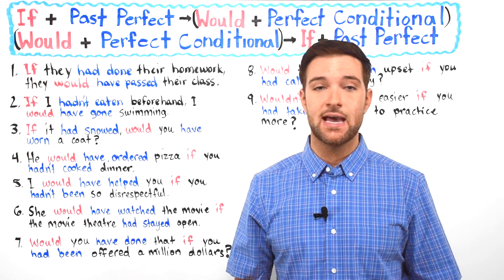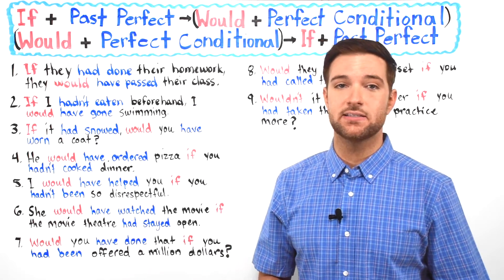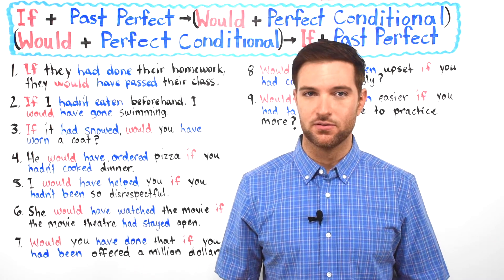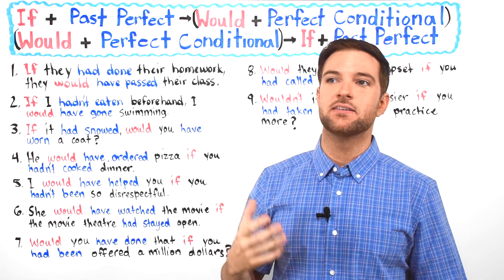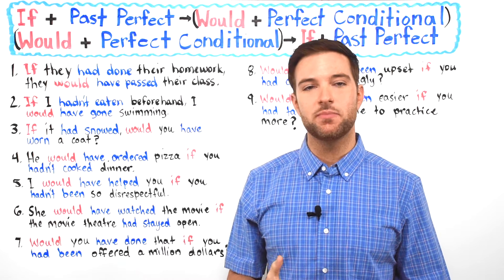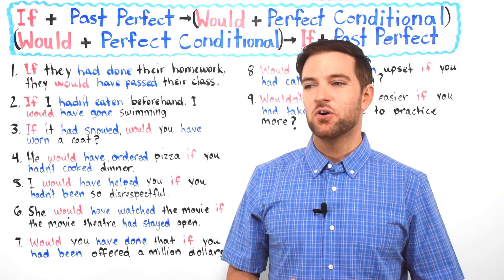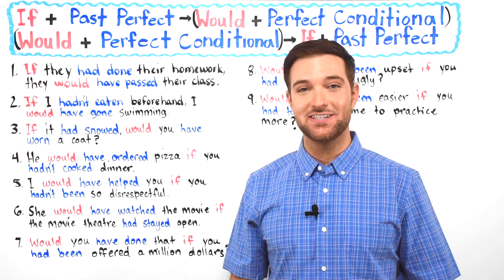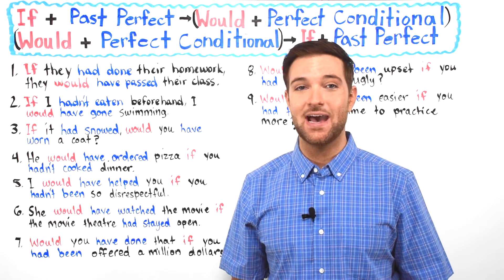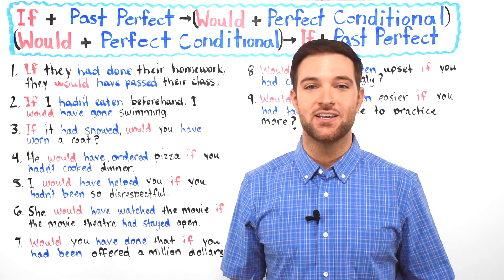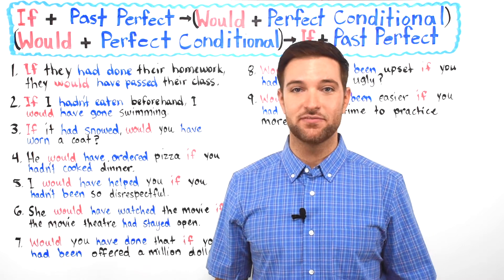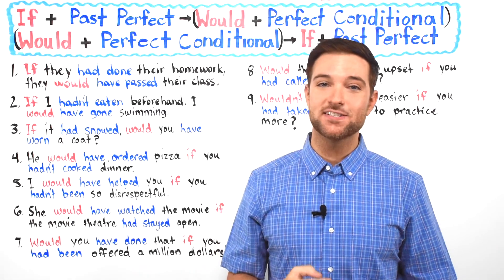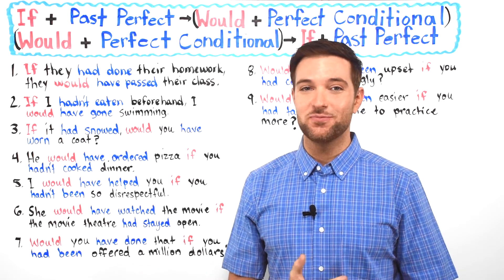Now today, we're going to be looking at the type 3 conditional, which basically states that if this would have happened, then this would have happened too. This conditional is pretty hypothetical — you're thinking about more abstract ideas. It's not necessarily a reality, but you're maybe having a conversation with a friend talking about 'what if I had done this or something like that.'